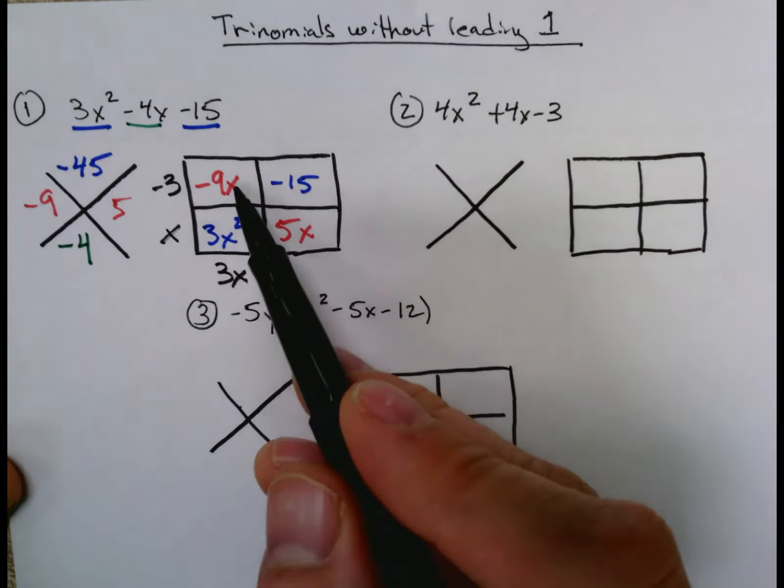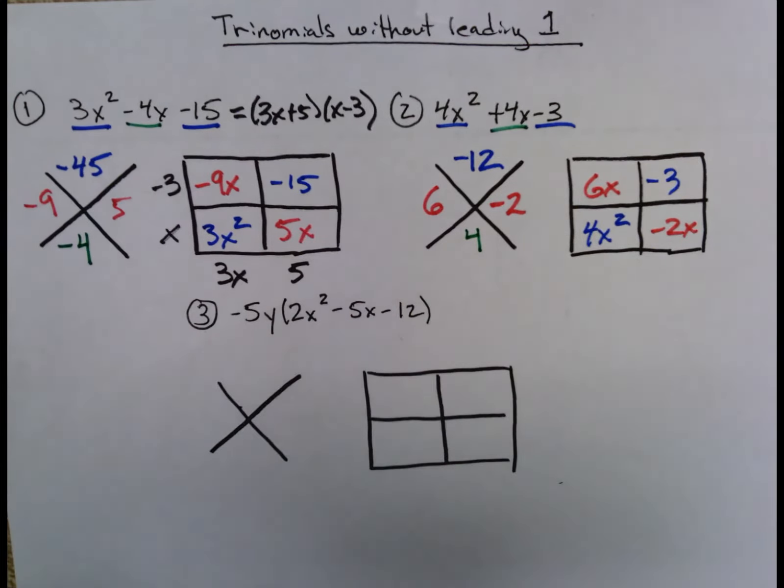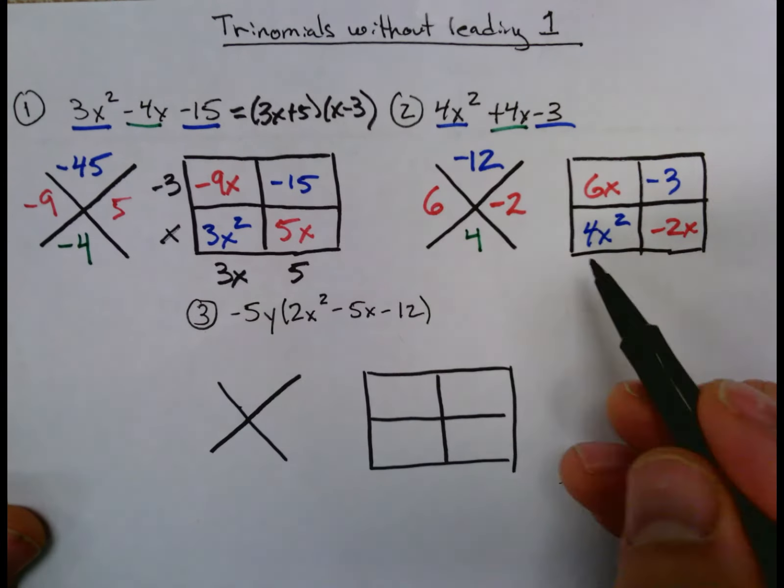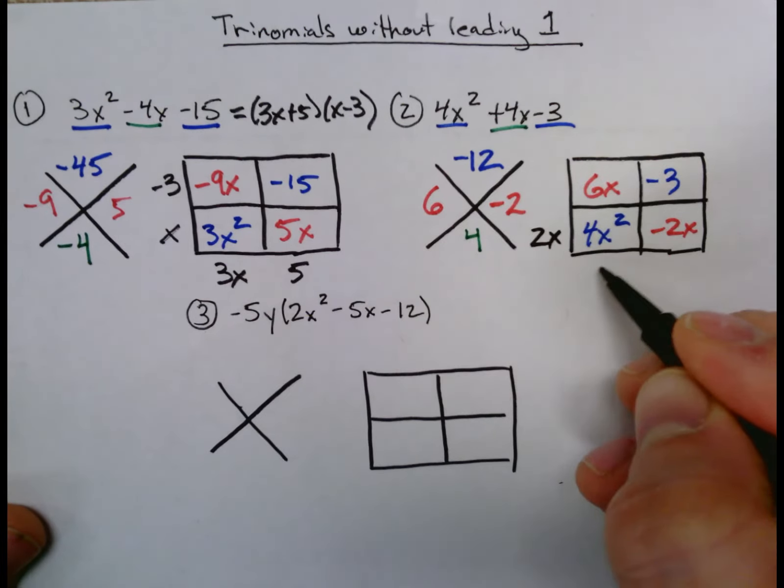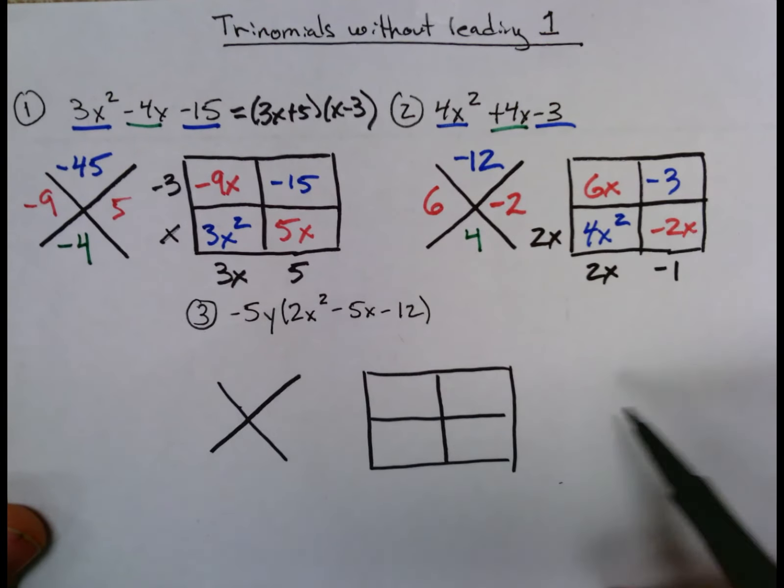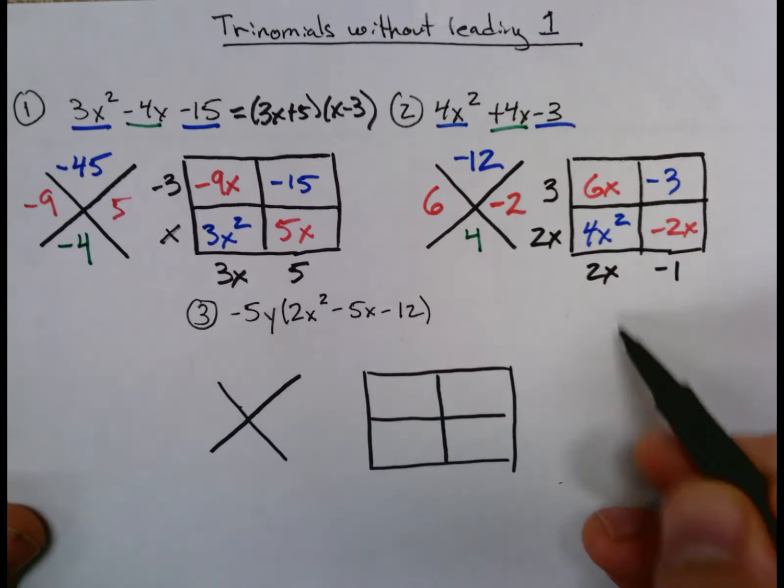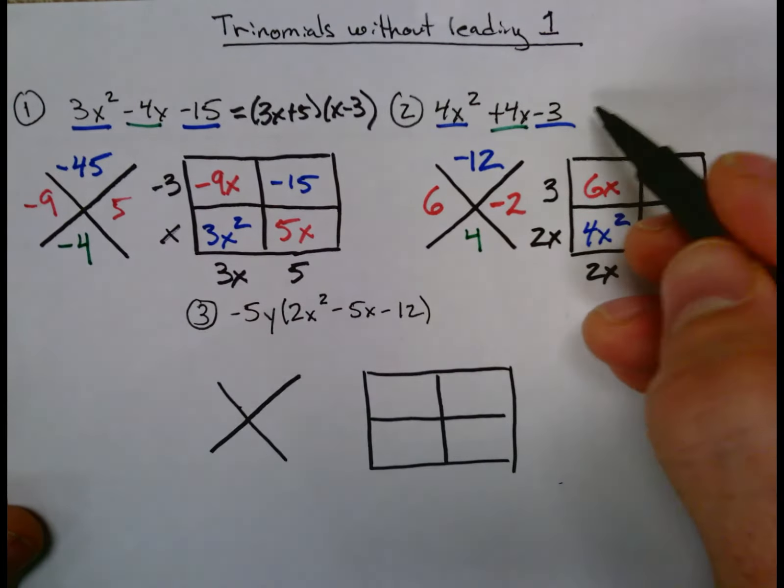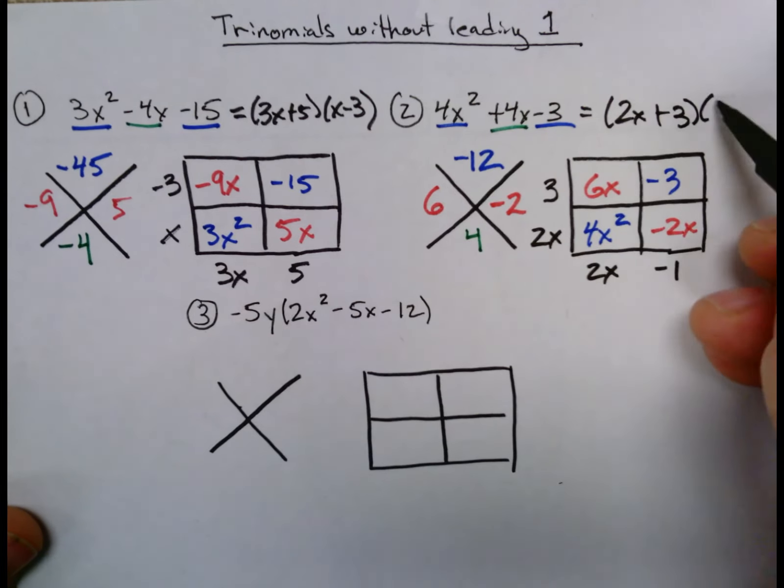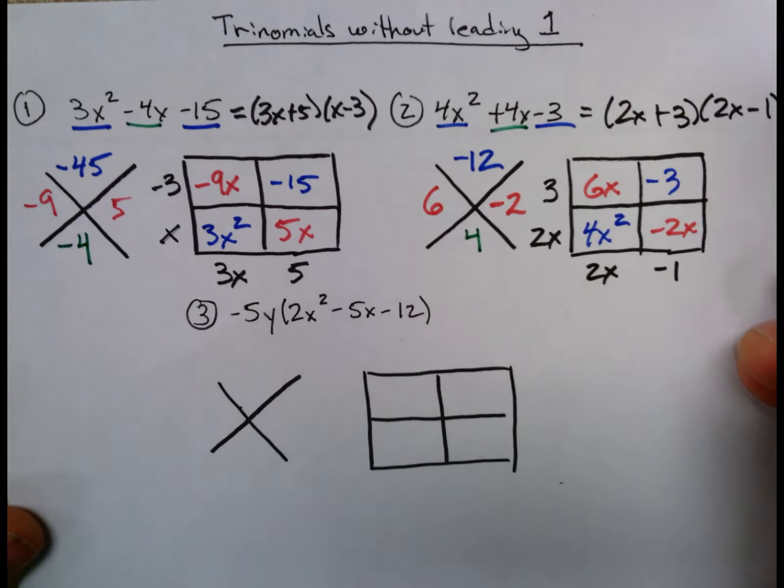Two numbers that multiply to -12 and add up to +4 would be +6 and -2. So you have 6x and -2x in your generic rectangle. And then you continue your process by factoring those dimensions. So I have a 2x out here. This has to be a 2x as well, and a -1 to make that -2x. This has to be a 3. The whole generic rectangle works. And you end up with (2x + 3)(2x - 1) as your factors.